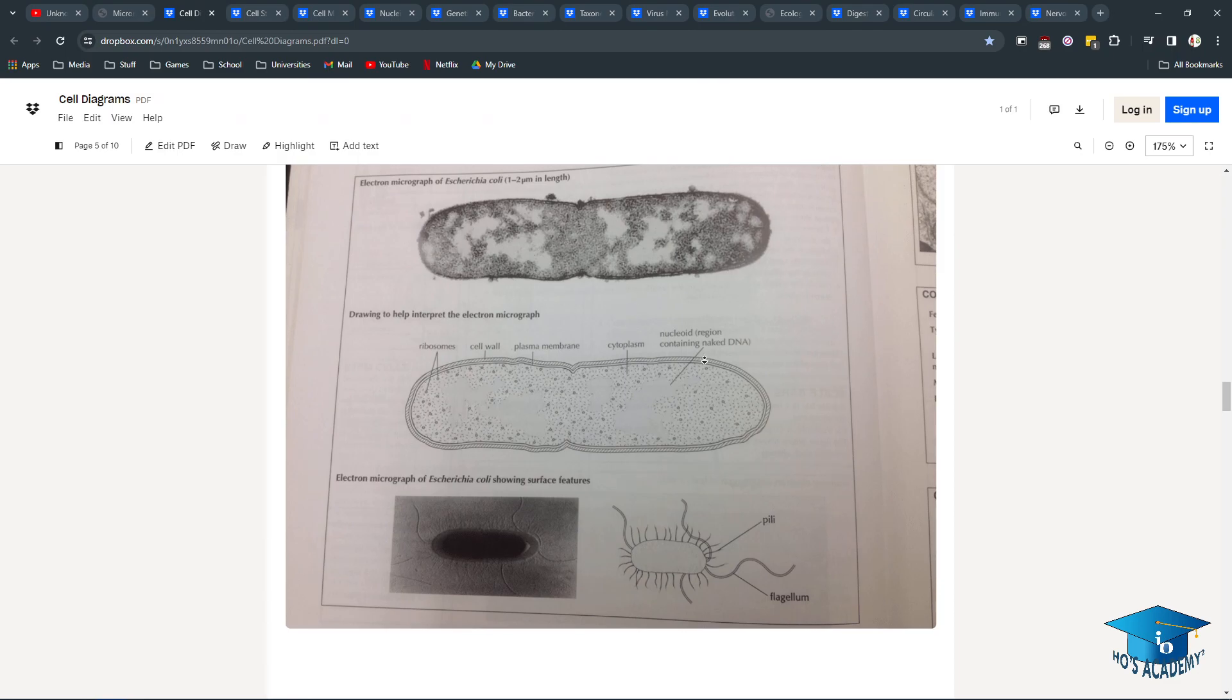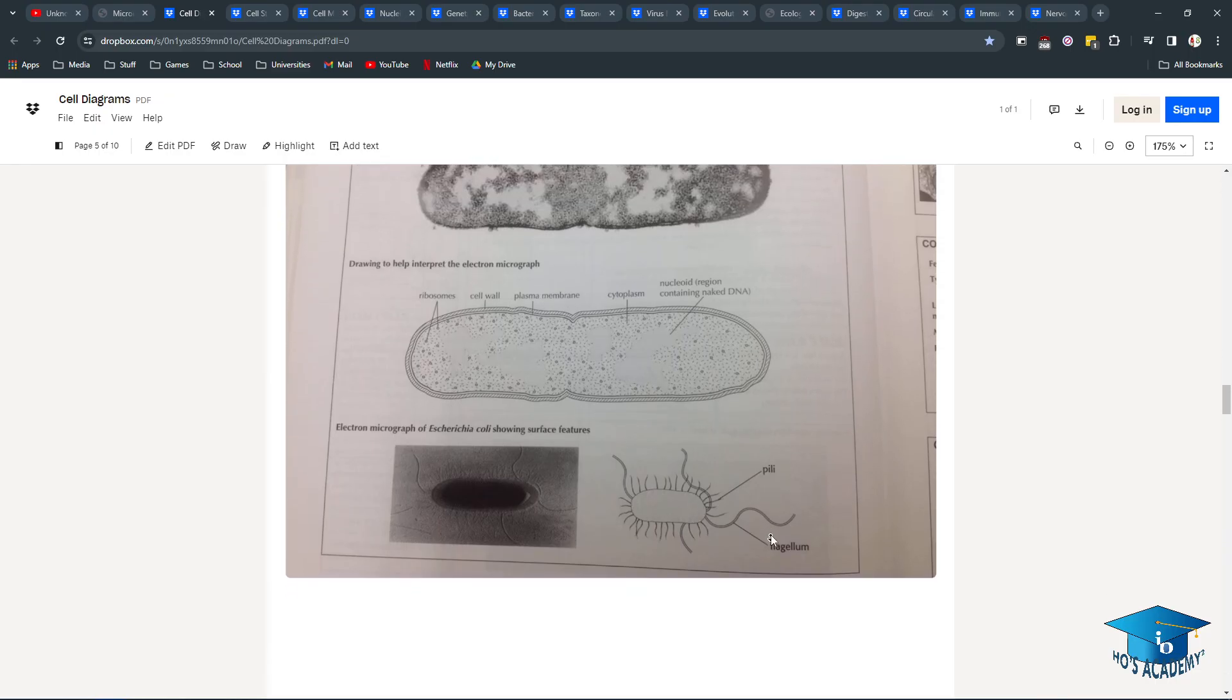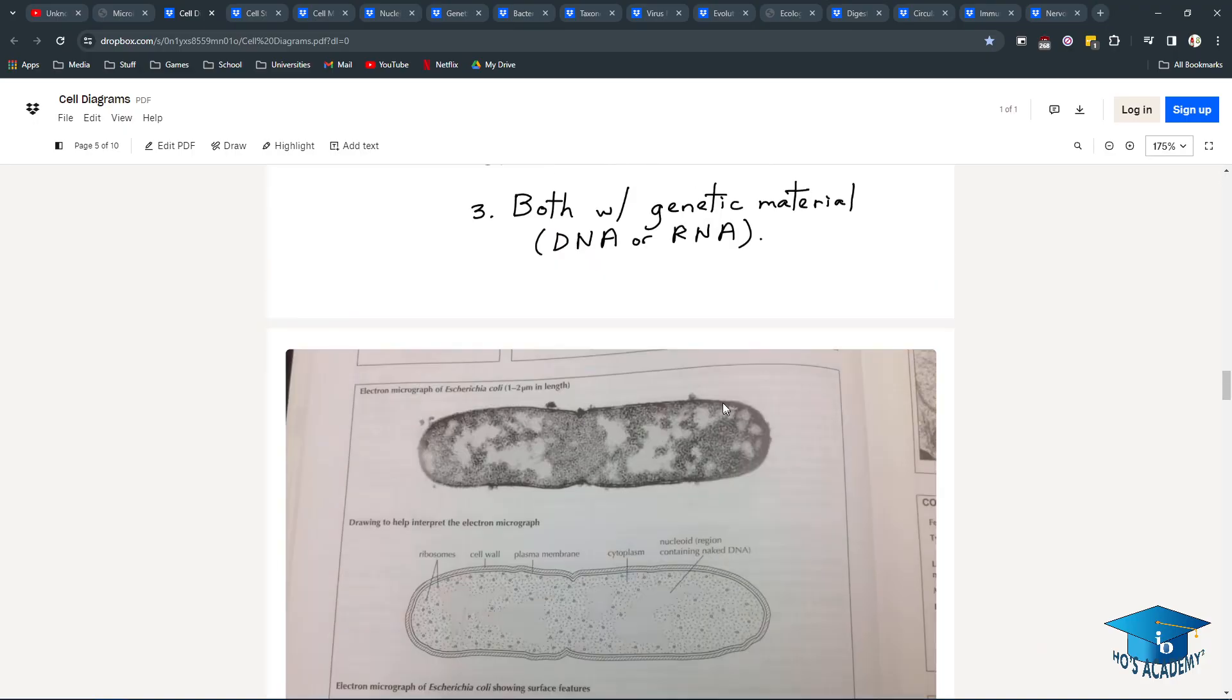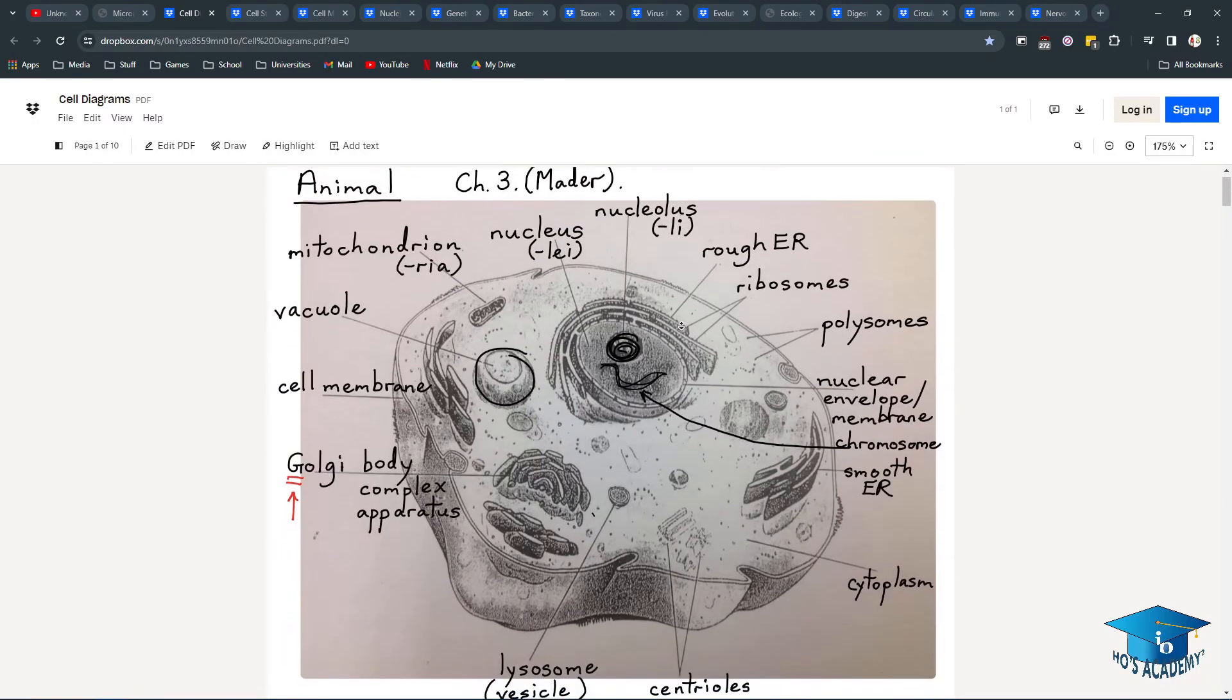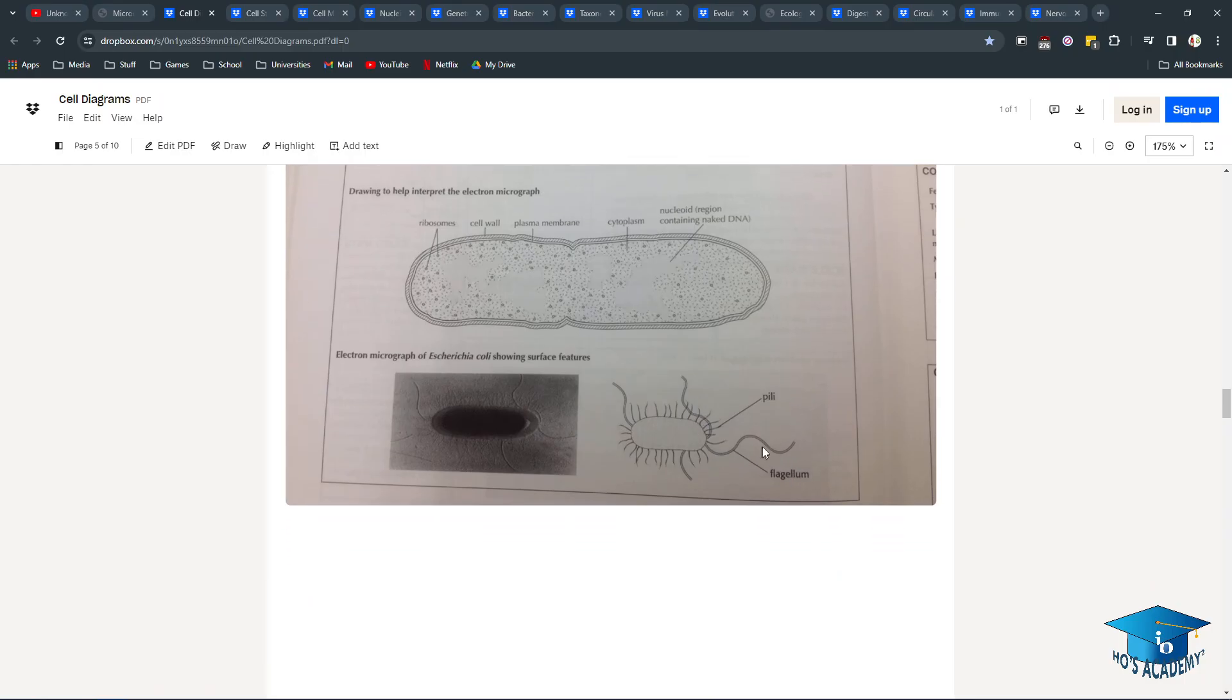This is a micrograph of E. coli. It shows the peptidoglycan cell wall. So prokaryotes do have the cell wall, called the capsule for prokaryotes and bacteria. They have pili, which look like cilia used for locomotion in animal cells, except they can transfer DNA. And we have the flagellum, which are long strand-like things used for locomotion.